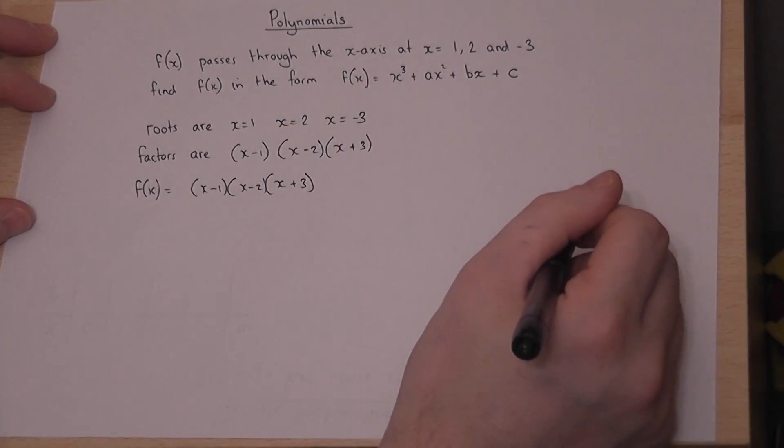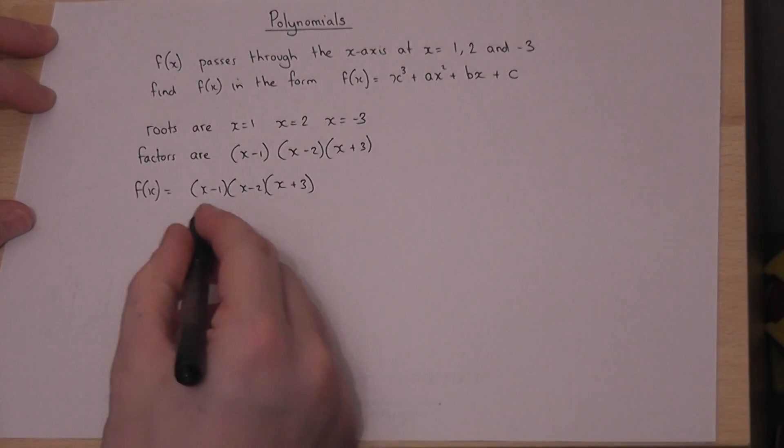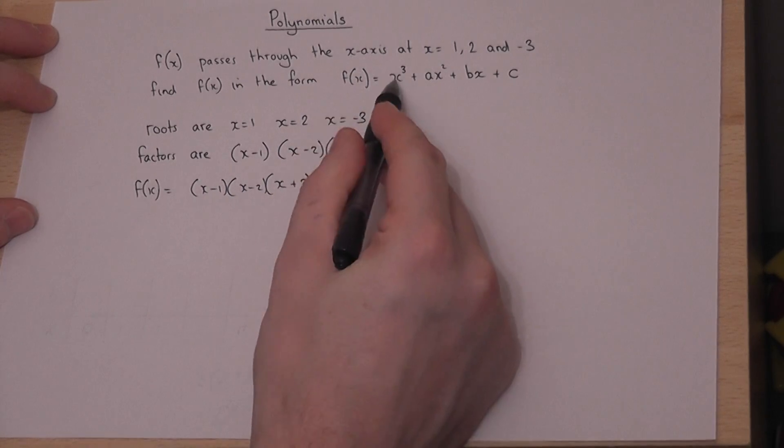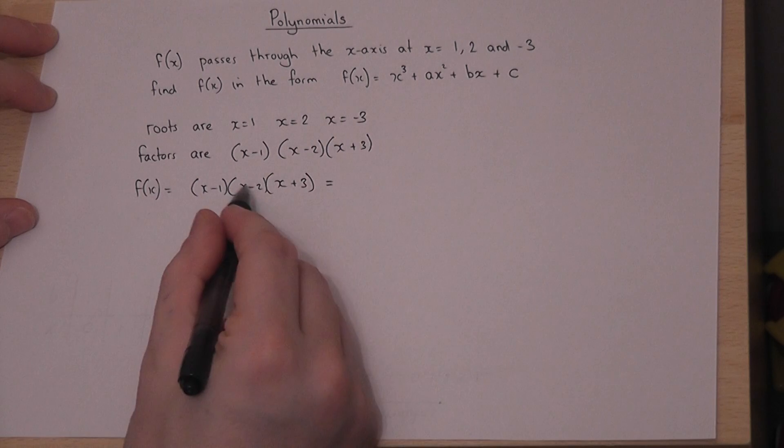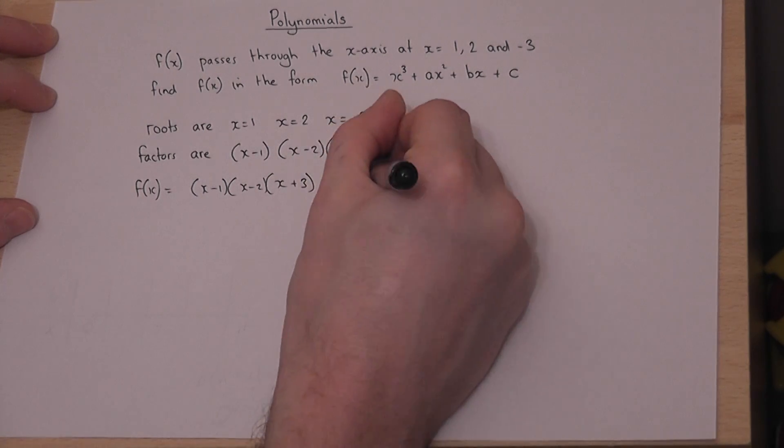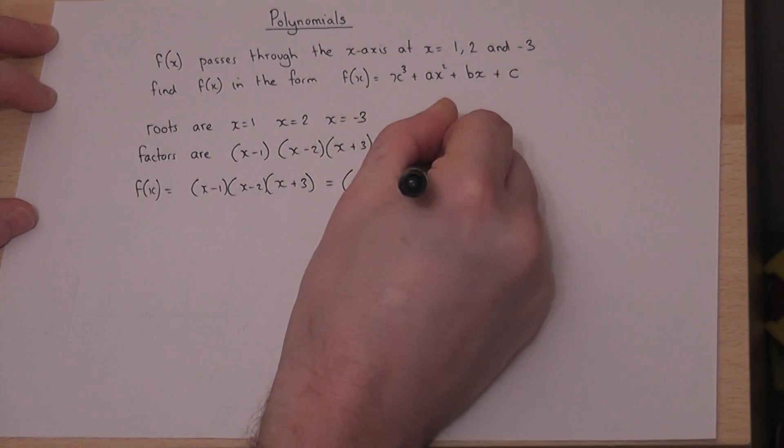However, this question wants this to be expanded into expanded form. To do that, we'll expand those two brackets first: x² - 3x + 2.